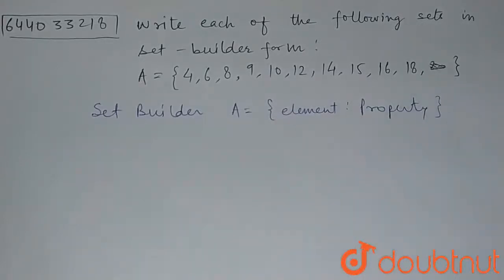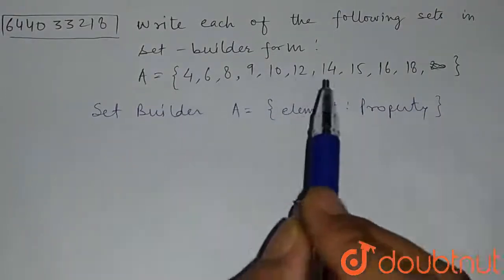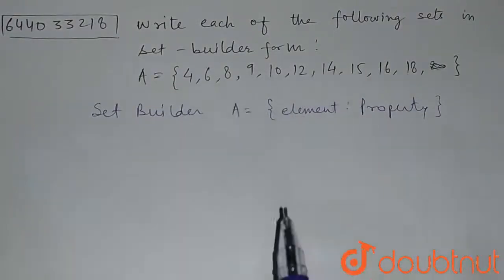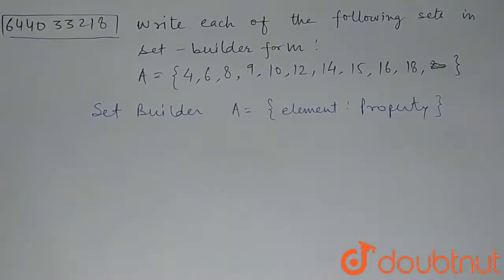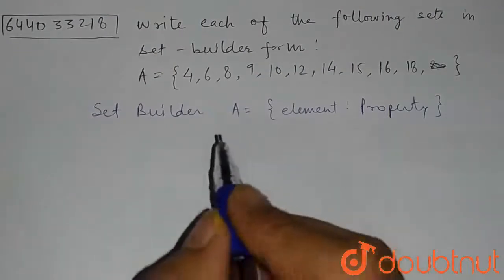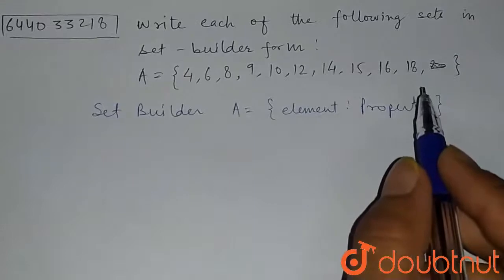So what property are we seeing here? If we try to observe these numbers four, six, eight, nine, and so on, they are composite numbers. Composite numbers have factors other than one and the number itself. So these numbers are composite numbers which are less than 20.